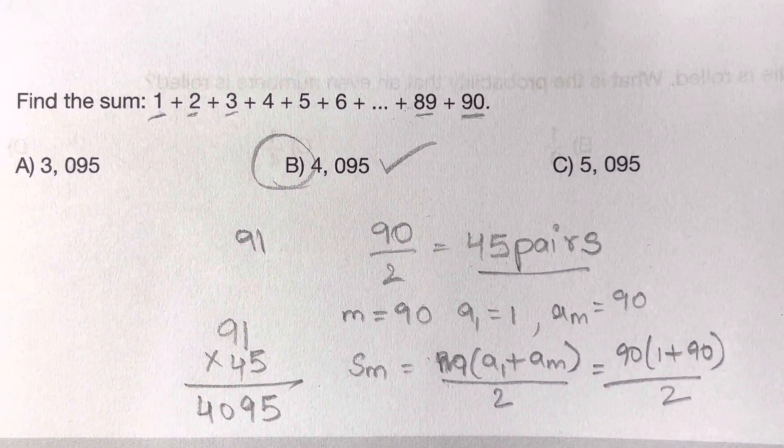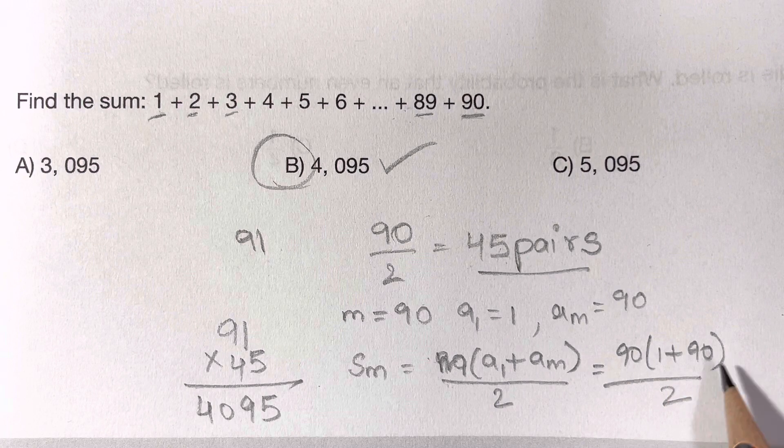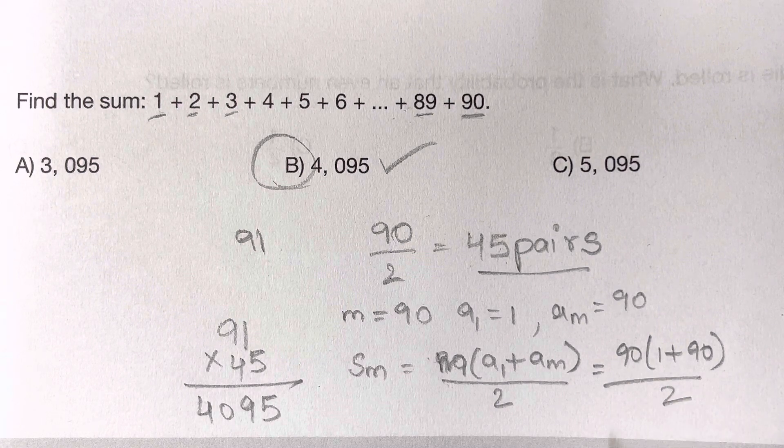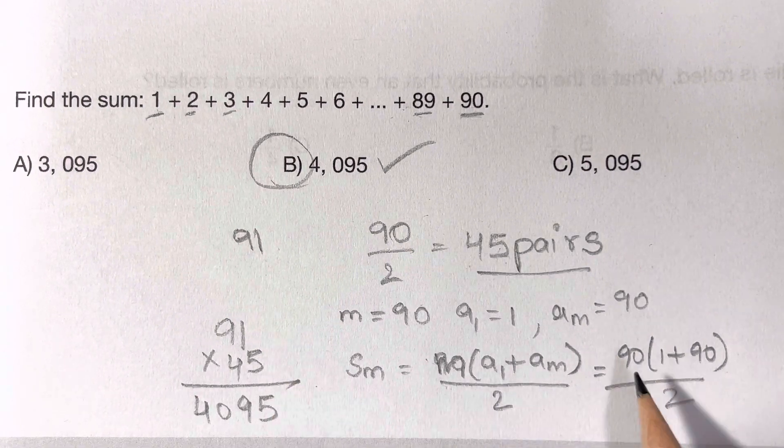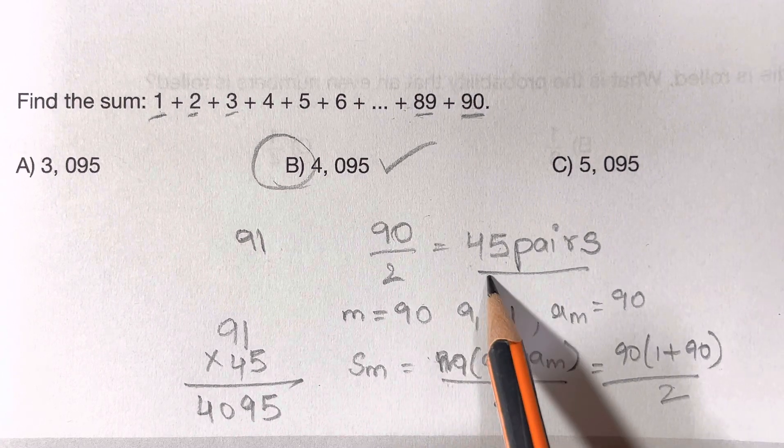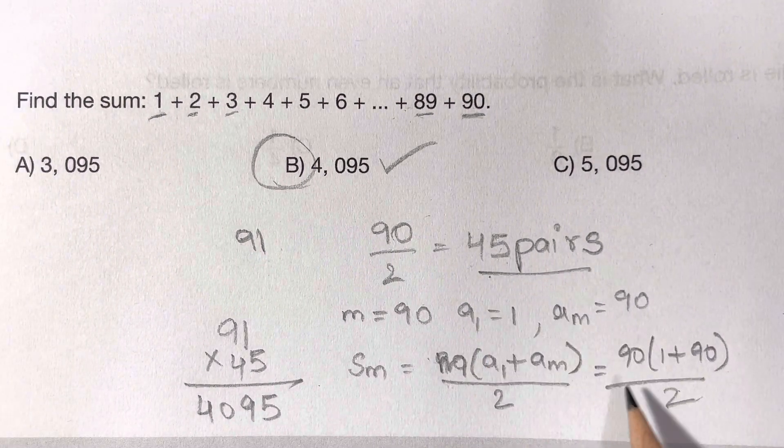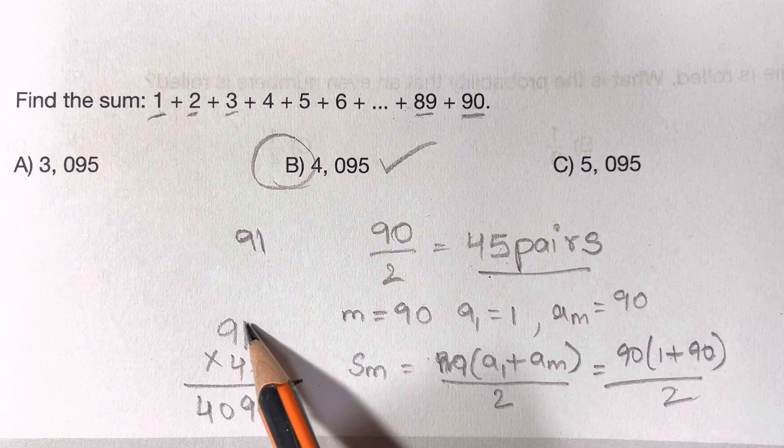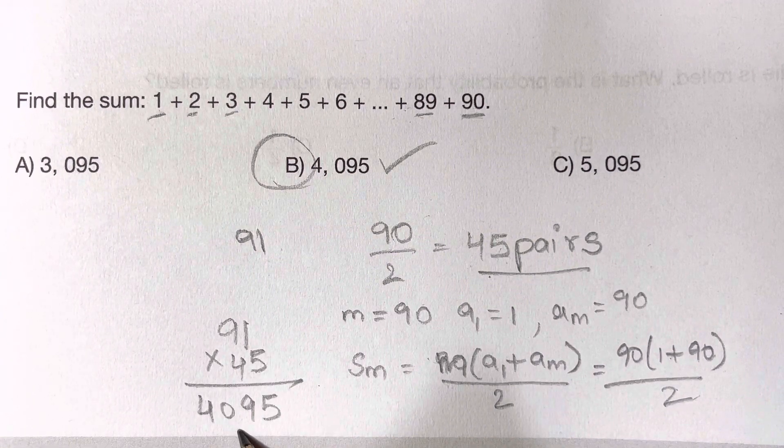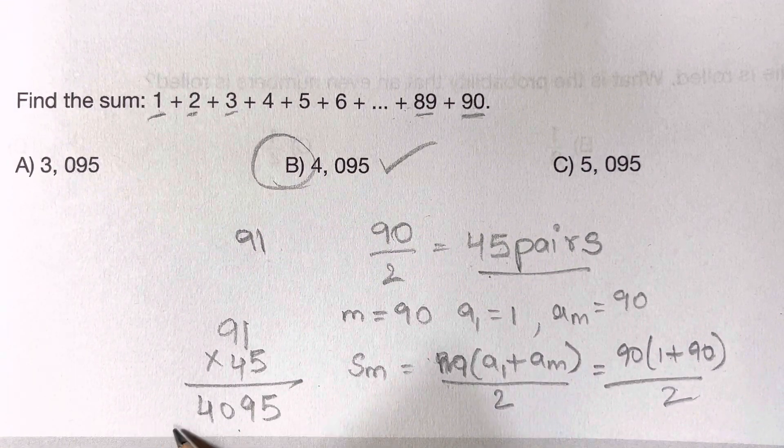That's your answer. 1 plus 90 by 2 is equal to the same thing. 90 by 2, you got 45 pairs, and 1 plus 90 is 91. 91 times 45 is 4,095. That's your answer.